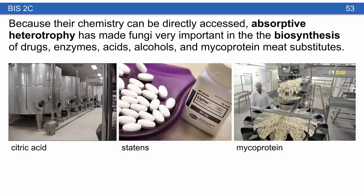Fungi are used to produce most of the citric acid we use, which is an important food preservative. Fungi have also been crucial to the development of statins — first discovered in fungi and having saved countless lives. Mycoprotein, a new kind of protein being developed as a meat substitute, is entirely derived from fungi.